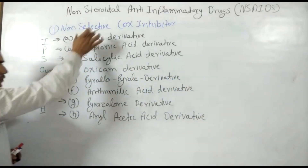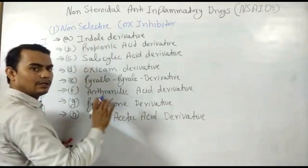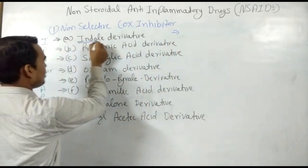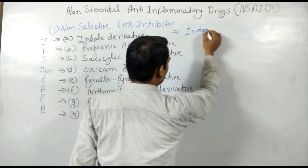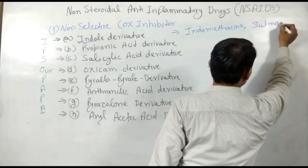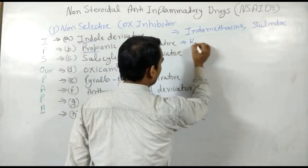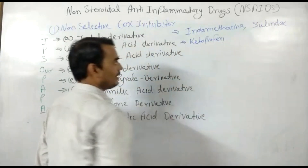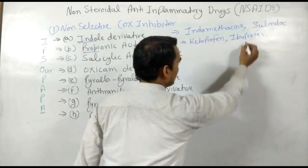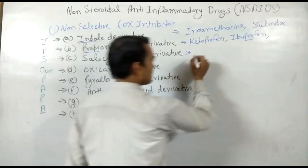So by this mnemonic, you will remember all the subclasses of the non-selective COX inhibitor. Now the drugs of each class — by the first name you will easily identify the drug. Indole derivative: the drug is indomethacin, as well as sulindac. Propionic acid derivative — remember 'proph': ketoprofen and ibuprofen both contain 'prof'. Salicylic acid derivative — as the name indicates, salicylate, which is our aspirin.